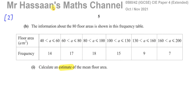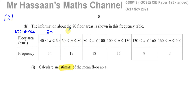The reason it's an estimate is because we don't know the exact value of any of these areas. The best way to estimate is to take the mid-interval value. There are 14 houses with an area somewhere between 40 and 60 meters squared, so we take what's exactly in the middle. To find the mid-interval value, you add the two limits together and divide by two - halfway between 40 and 60 is 50.